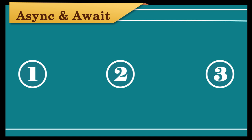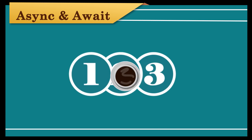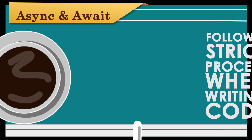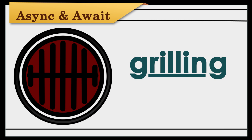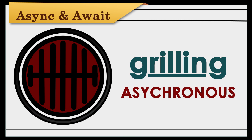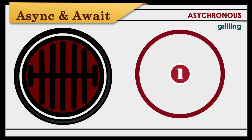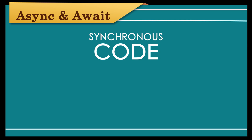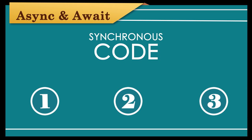Just as you have to follow the process to make a cup of coffee, most developers also follow a strict process when they're writing code. It's a fairly straightforward and easy process. Just like grilling, when you write asynchronous code, you tell the program to complete multiple tasks at once — it's incredibly important in the world of mobile technology. When you write synchronous code, you force every step to wait until the previous step is complete.